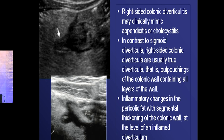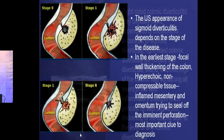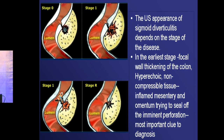In contrast to sigmoid diverticula, right-sided colonic diverticula are usually true diverticula with all layers of the colonic wall. The typical sign is inflammatory changes in the pericolic fat with segmental thickening of the colonic wall at the level of the inflamed diverticulum. There will be an outpouching with fat stranding around it — that is typical diverticulitis, right- or left-sided, following a similar pattern.